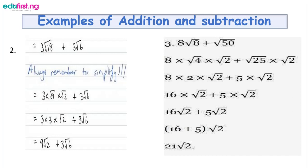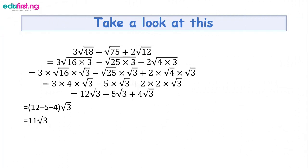The next example is 3 root 48 minus root 75 plus 2 root 12. Root 48 breaks into 16 times 3, root 75 into 25 times 3, and root 12 into 4 times 3. Root 16 is 4, root 25 is 5, root 4 is 2. This gives 3 times 4 root 3, minus 5 root 3, plus 2 times 2 root 3 — that is 12 root 3 minus 5 root 3 plus 4 root 3. Combining the coefficients: 12 minus 5 plus 4 equals 11 root 3.